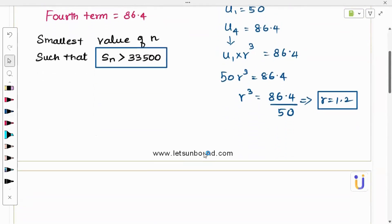Then smallest value of n. Let's go here. Sn is greater than what? What is the Sn formula? Sn formula is u1 into whole bracket r power n minus 1 divided by r minus 1. So this thing is greater than 33,500. We need to simplify this inequality and fetch for n. I know u1 and r, only one unknown is n. So it's very simple.